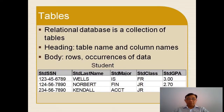In this student table, you have five columns: student social serial number, student last name, student major, student class, and student GPA. And here you have three rows — the first row for student last name.